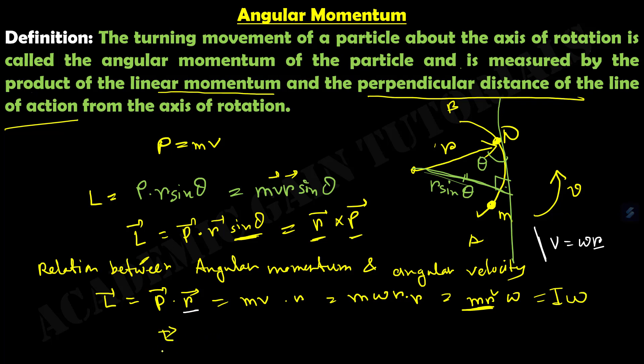So L equals I omega is the relationship between angular momentum and angular velocity. In this lecture, we discussed torque and angular momentum, which will help us understand Newton's law of circular motion in detail.